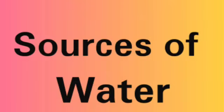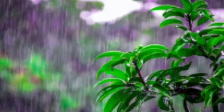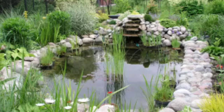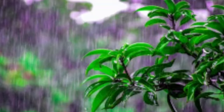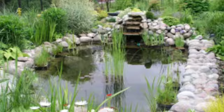Our first topic is surface water. Rainwater slides off the ground as surface water and fills ponds, lakes, rivers, and the sea. When rainwater runs off the ground, the water eventually goes into the sea.